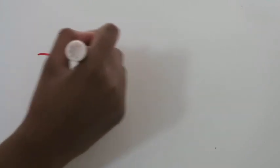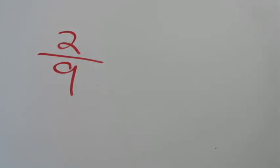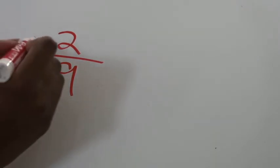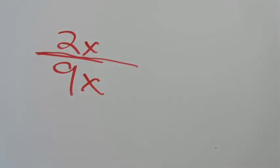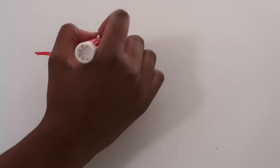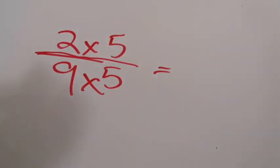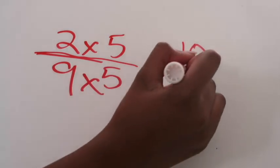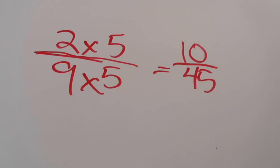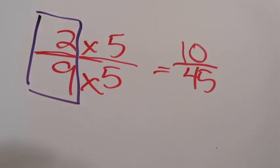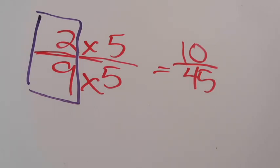45 has to be the denominator for both fractions so I can create equivalent fractions. Going back to the first fraction, 2/9: right now it has a denominator of 9, but I need to change that to 45. I ask: 9 times what equals 45? That's 5. The rule is whatever you do to the denominator must be done to the numerator. So 2 × 5 = 10 and 9 × 5 = 45. An equivalent fraction to 2/9 is 10/45.